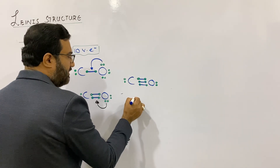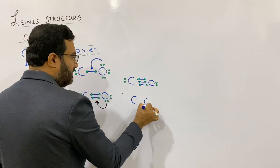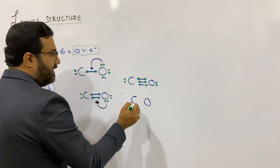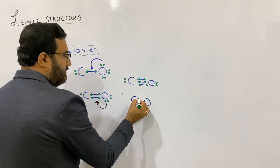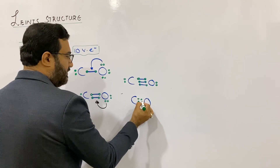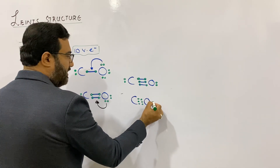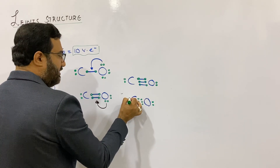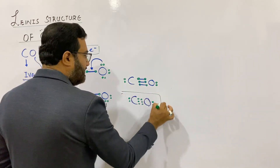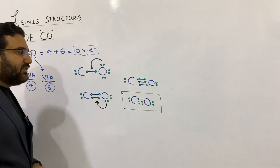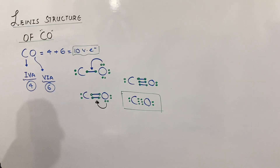Now write down its dot structure: C≡O. There will be six electrons in the form of three bond pairs, one lone pair with oxygen and one lone pair with carbon. That is the electron dot structure, or Lewis dot structure, of carbon monoxide.